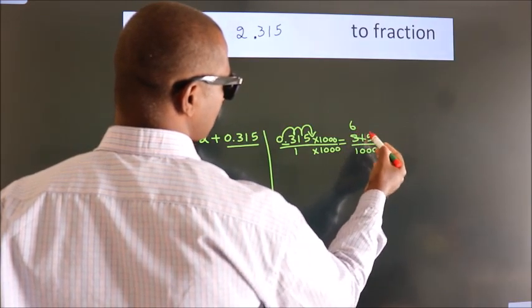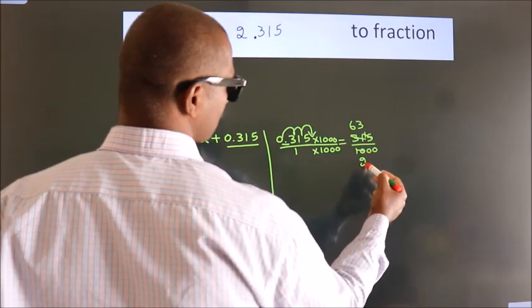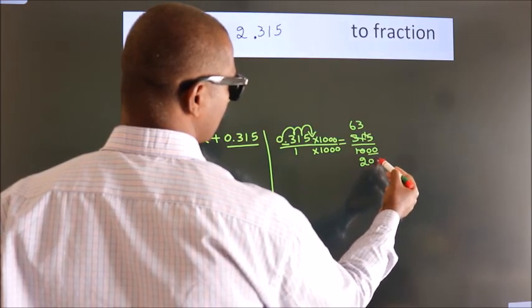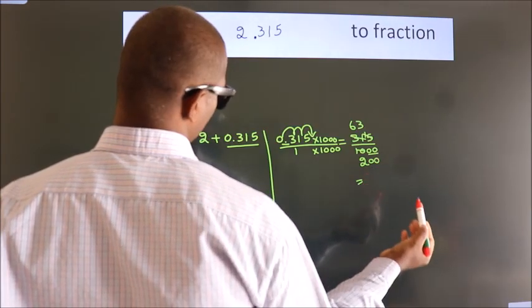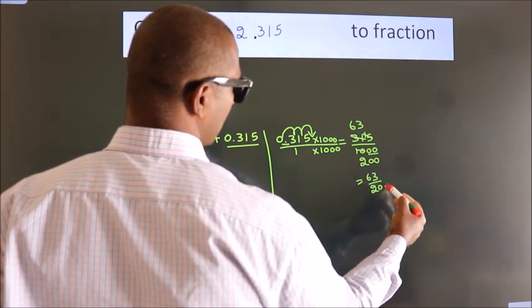5, 63. 5, 3s. 5, 2s. These zeros as it is down. So the fraction we got is 63 by 200.